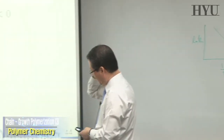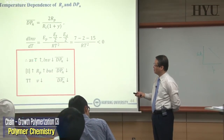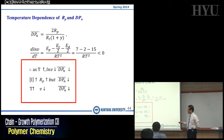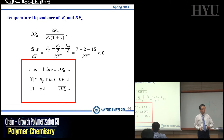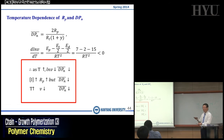In summary: if you increase the temperature, μ decreases, meaning you decrease the degree of polymerization; if you increase temperature, RP increases — just like initiator concentration has a square root dependence and monomer concentration has a linear dependence. These are the correlations for the temperature dependence of RP and DPN or kinetic chain length.